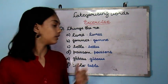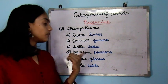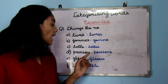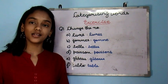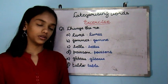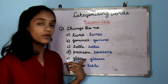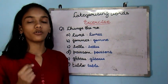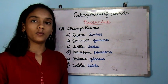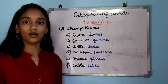Belle means beautiful — by adding an 's' we make belle plural. Poisson means fish — it doesn't have an 's', so it's singular. By adding an 's' we make it plural. Then we have gâteau. Gâteau means cake. It ends with a 'u', and as I taught you, if a word ends in 'u' we make it plural by adding an 'x', like we have done here.